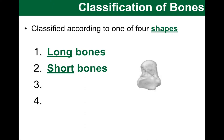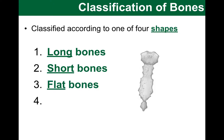The second-to-last type I want to introduce is flat bones. They are typically thin and flat, of course. They can also be slightly curved, as in the case of ribs. Here we see the sternum, our chest bone, as an example of flat bones. Also, for example, the scapula, the shoulder blade, and most skull bones would be good examples of this group.